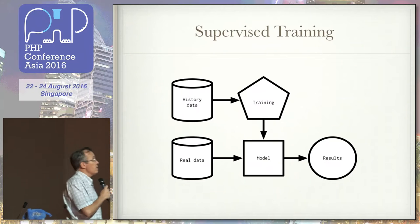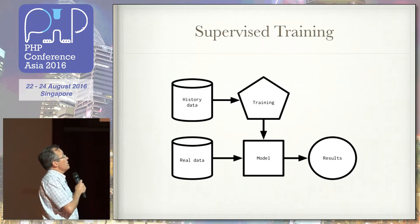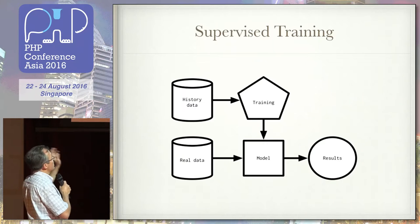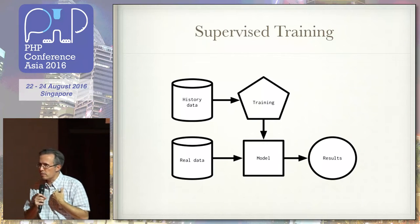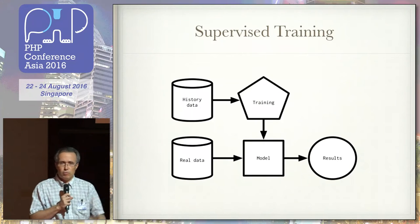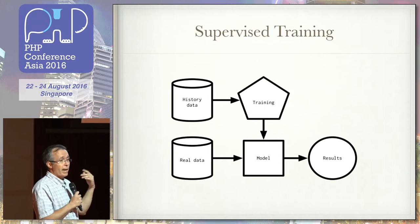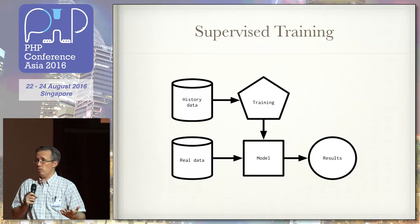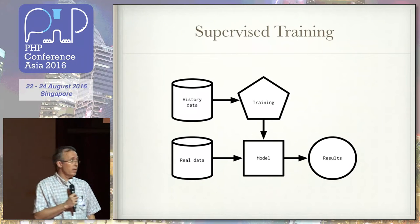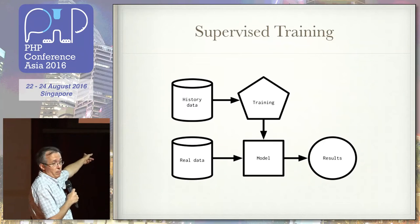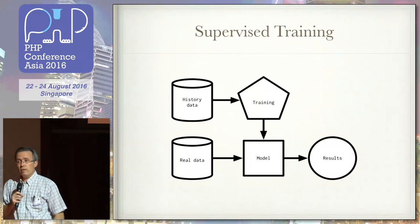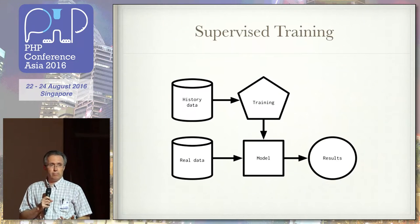Here's the synopsis. There are two branches. The first is training: we start with historical data and our own experience, do the training, and end up with a model. The model can be stored — we stop at that point. The second part: we take phpMyAdmin, all its comments, push them through the model, and get our actual results. Simple enough.